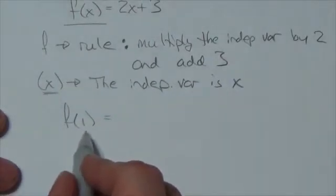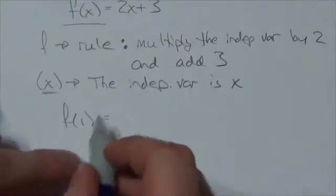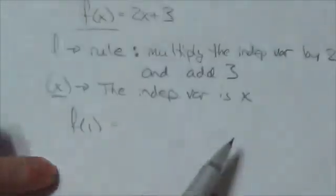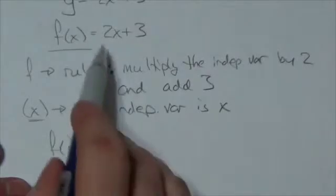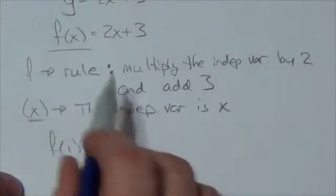This time, though, the value of the independent variable is 1. Now, notice I'm not multiplying the 1 by x. The mistake I see a lot is people try to leave the x in there. But no, no, no.